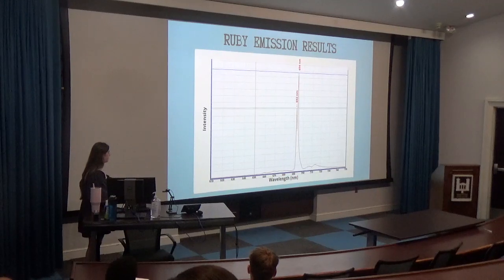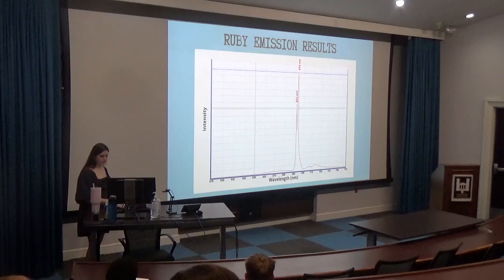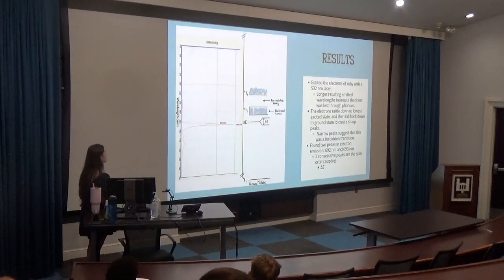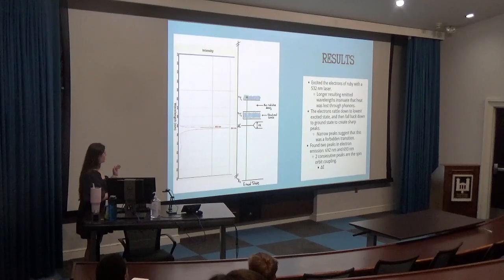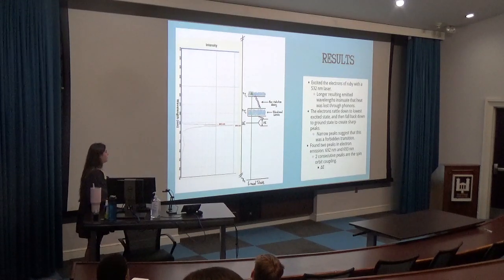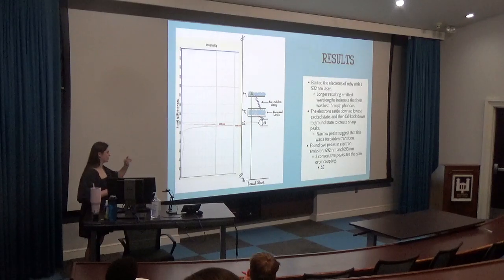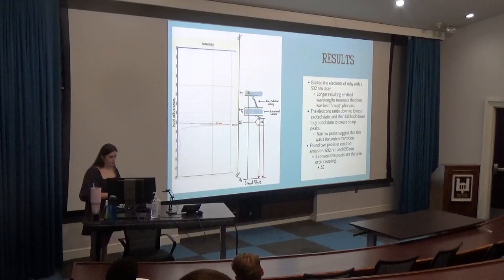Here are our results. On the x-axis we have wavelength, and on the y-axis we have intensity. We're not so much concerned with the intensity as with the wavelength, because that's what we were trying to find the emission for. We found two different peaks — one around 692 nanometers and one around 694 nanometers. This is the same graph flipped so we're able to observe our results with the energy levels already discussed. First we excited the atom with the green laser, then energy was lost through phonons or heat before the decay occurred once it hit the first excited state. Then the atoms were able to decay, and that's when we observed our two points.